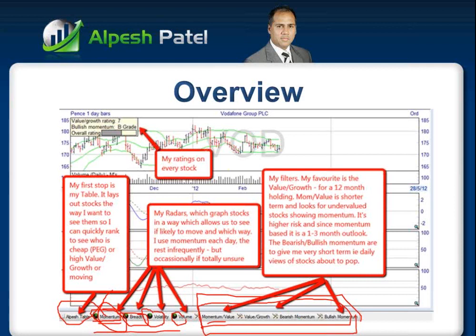Finally, box number four is my ratings on every stock, which gives a value growth rating. I'll go through what it means and how I get to that value growth rating. It's ranked out of 10, and for longer-term holdings, 7 out of 10 is pretty high. Nothing ever reaches 10 - it usually peaks at 9. It's based on valuations, principally price-earnings-growth and price-earnings, then I also look at revenue growth and earnings growth, and finally income. Today I'm going to talk on the short-term end, focusing on the Alpesh table, momentum radar, and momentum filters.